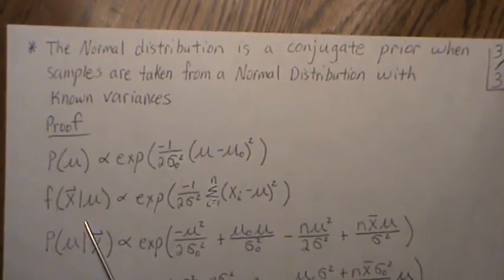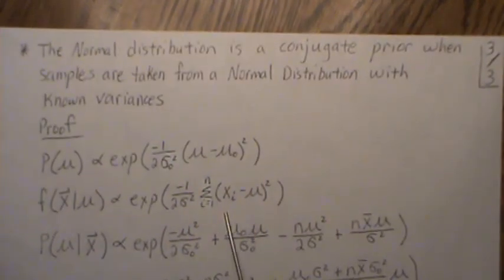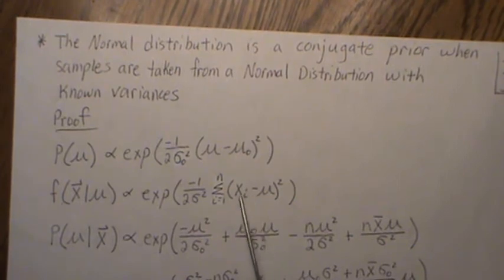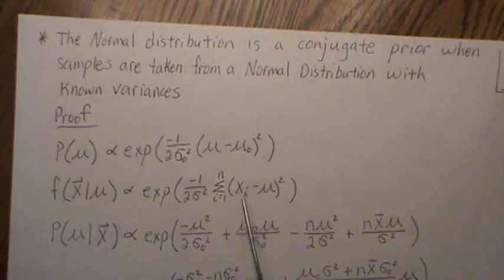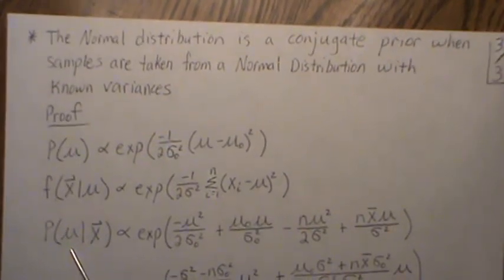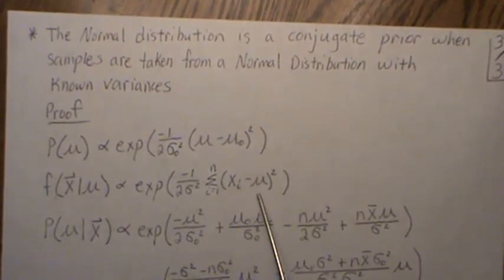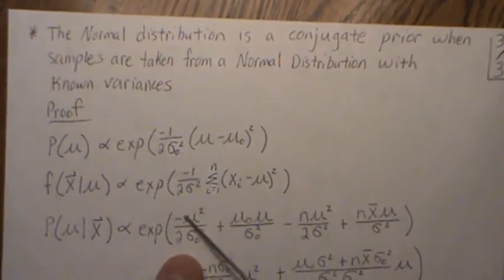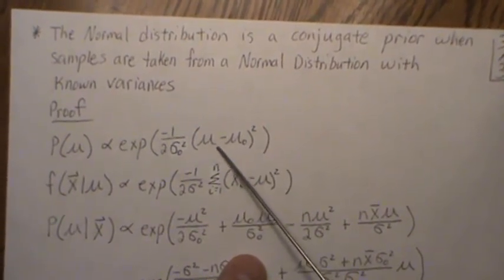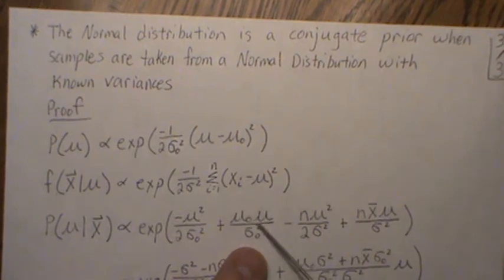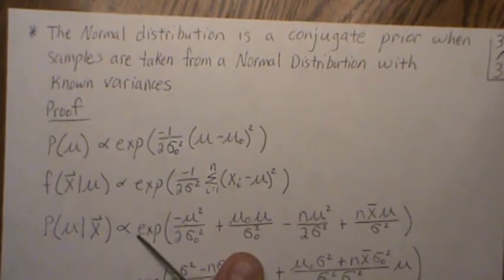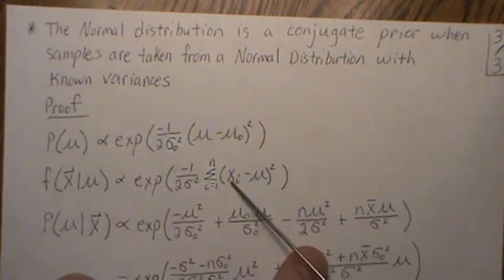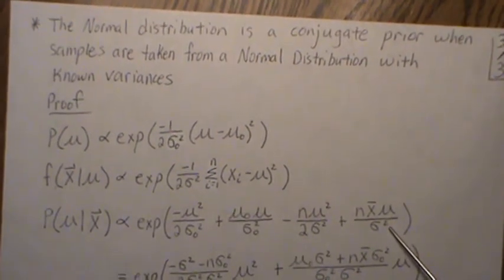The likelihood function is also proportional to a normal with mean mu. The X's are constant, so squaring the term gives X_i squared minus two X_i mu plus mu squared. The X_i squared can be factored out and dropped. For the posterior distribution of mu given the data, we take the product of the prior and likelihood terms. The mu-naught squared and X_i squared terms go away as constants. We're left with mu squared terms and cross terms involving mu-naught and the X_i's.